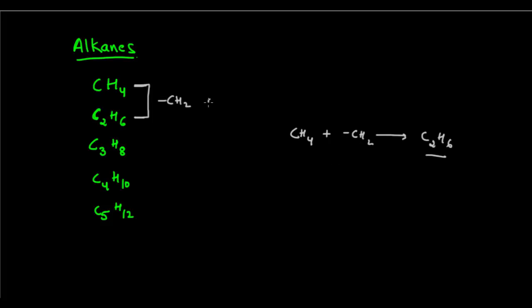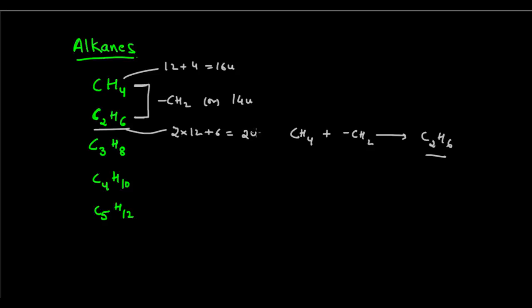There is also a difference in mass of 14U. CH4 has a mass of 12 + 4, which is 16U, and C2H6 has a mass of 2×12 + 6, which is 24 + 6 = 30U. Taking the difference: 30 minus 16 equals 14U. So there is a difference of 14U of mass between two progressive hydrocarbons of the alkane series.